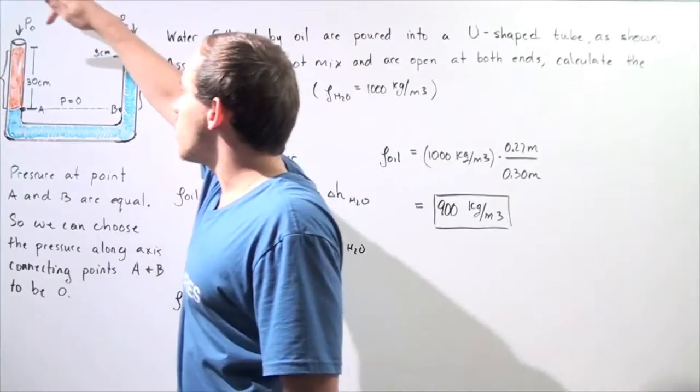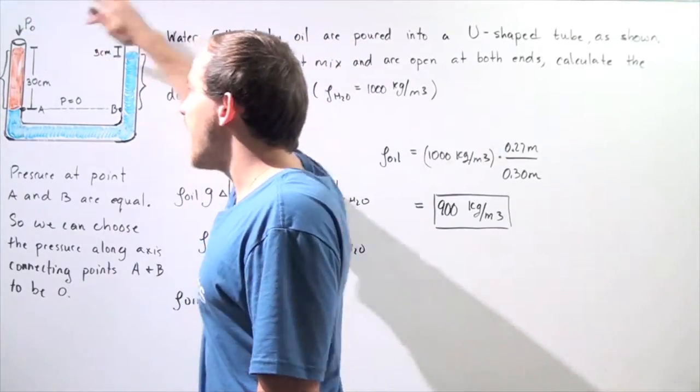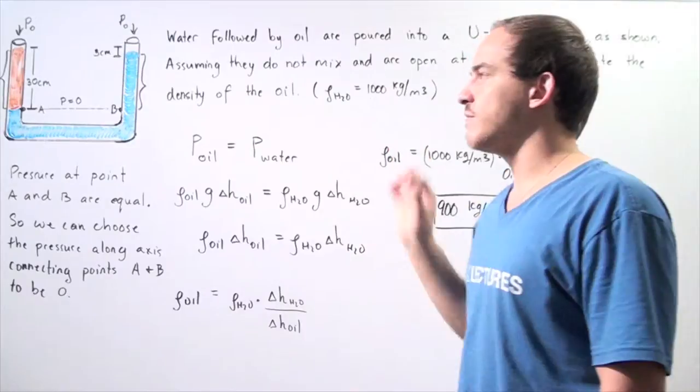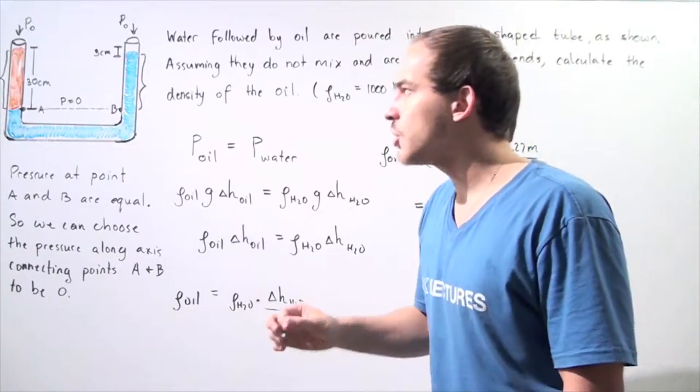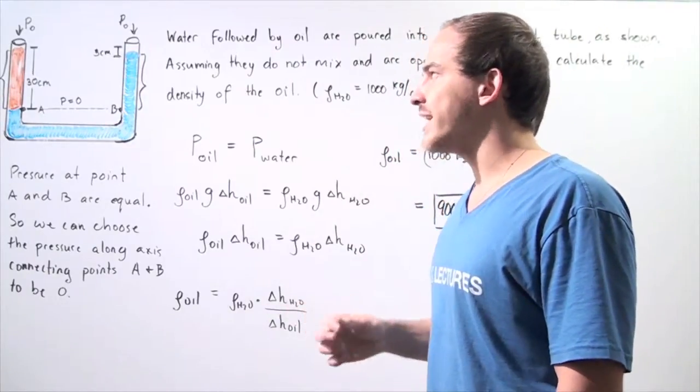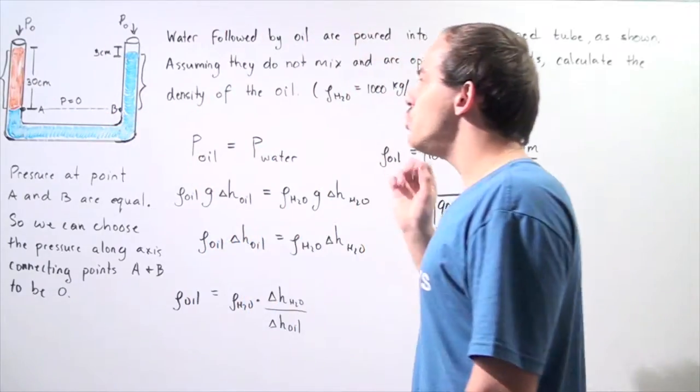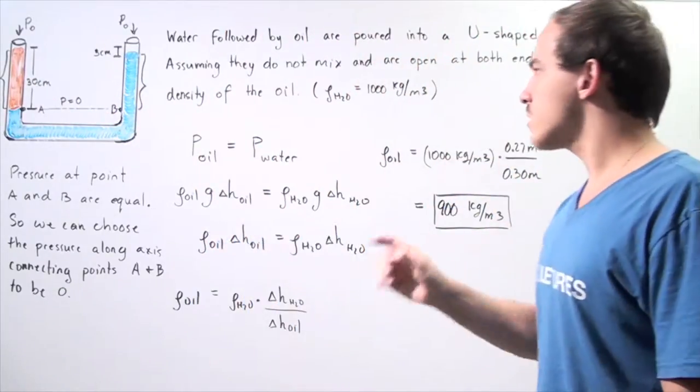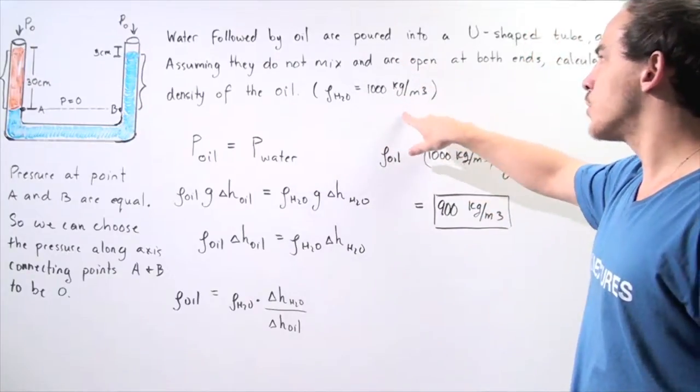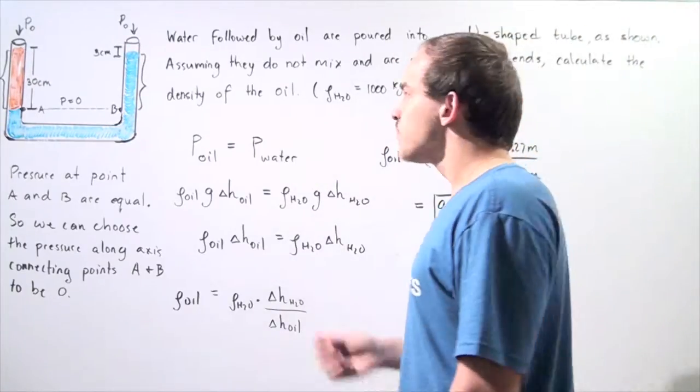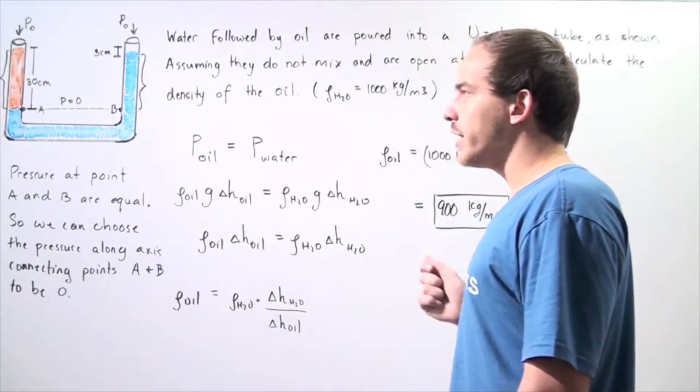Now our container at both ends is exposed to our atmosphere, and that means the pressure created by the atmosphere is exactly the same at both ends. So knowing the density of water is 1000 kilograms per meter cubed, we'd like to calculate the density of the oil.